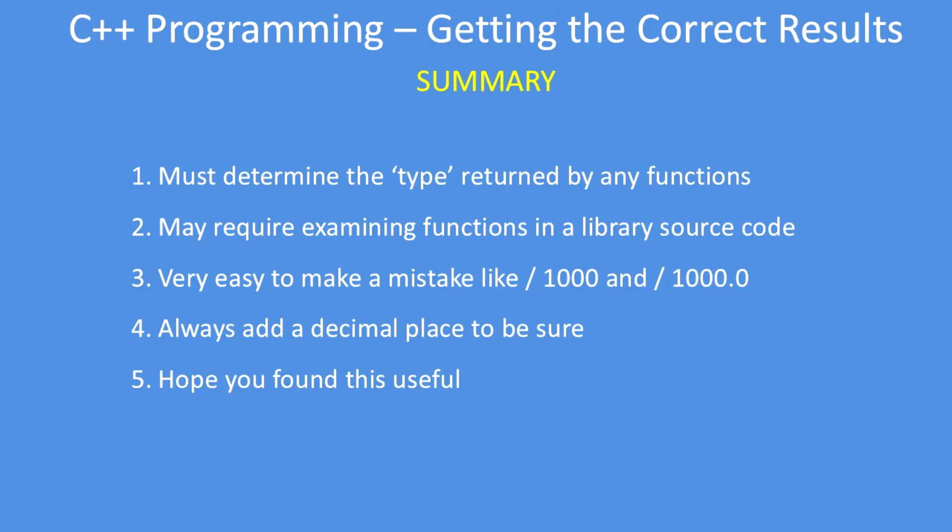It's very easy to make that mistake like divide by 1000. That's a natural way of writing a program rather than divide by 1000.0. So always add a decimal place on any divisor. The compiler will ignore it if necessary.